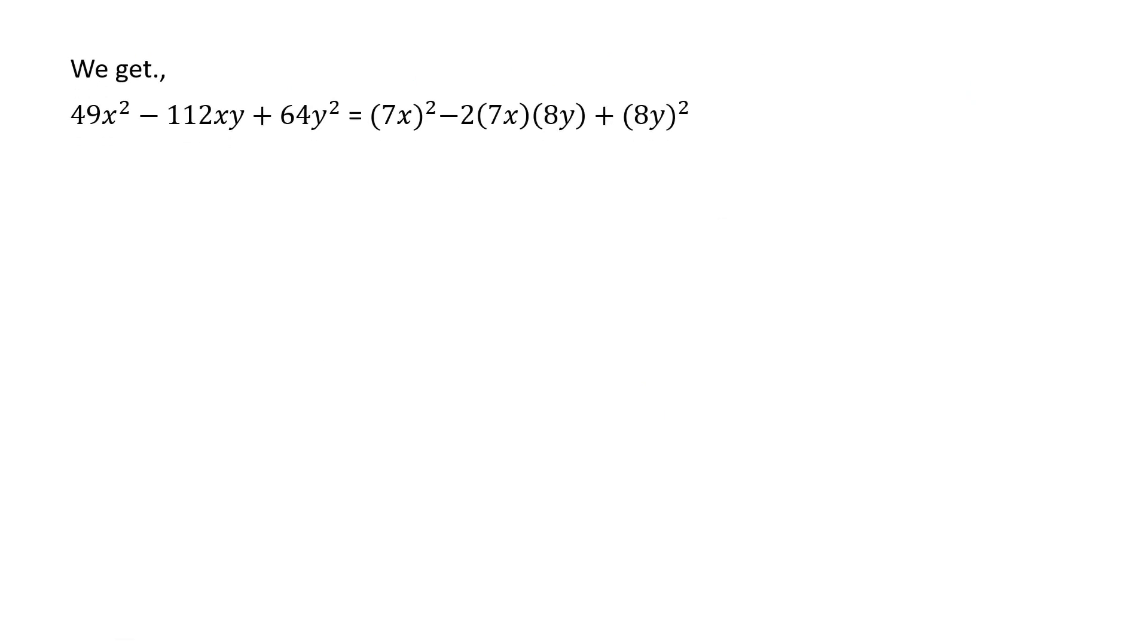Now implementation has to be done. 49x square minus 112xy plus 64y square is equal to 7x whole square minus 2 times 7x times 8y plus 8y square.